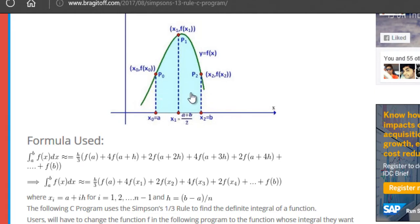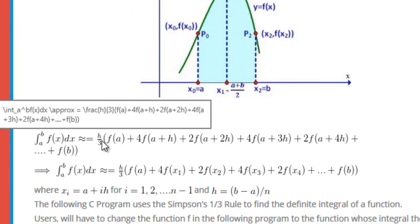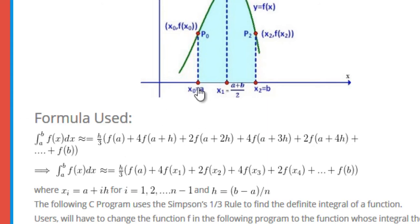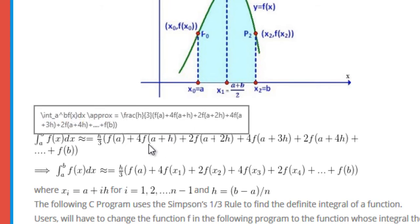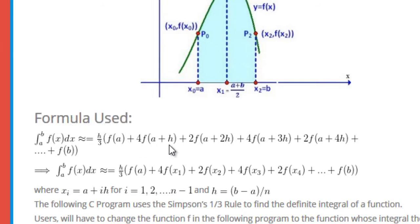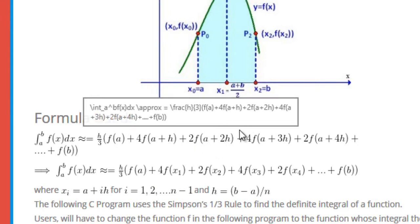So the spacing between two consecutive points is called h. We have h over 3 times f of a — the value at the lower limit — then the value at the next point f of a plus h multiplied by 4, then f of a plus 2h — the value at the third point — multiplied by 2, and so on.